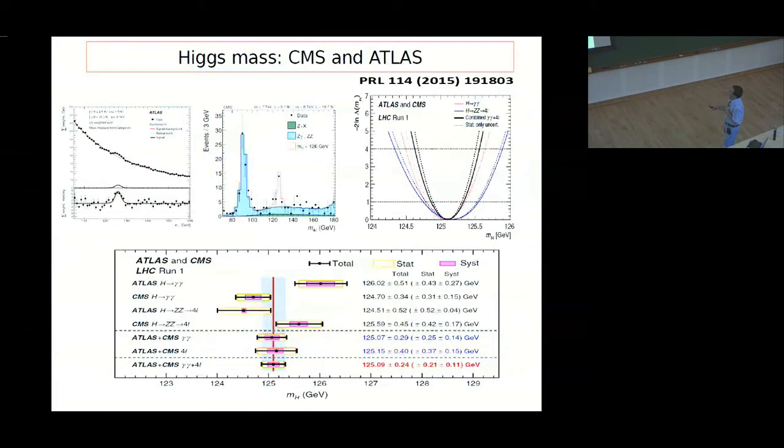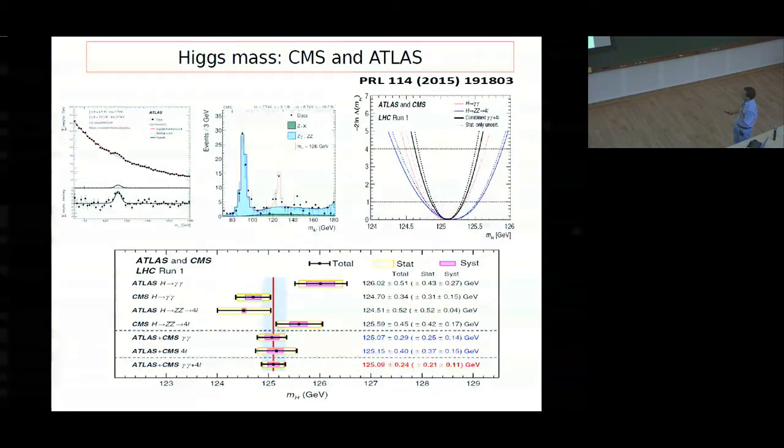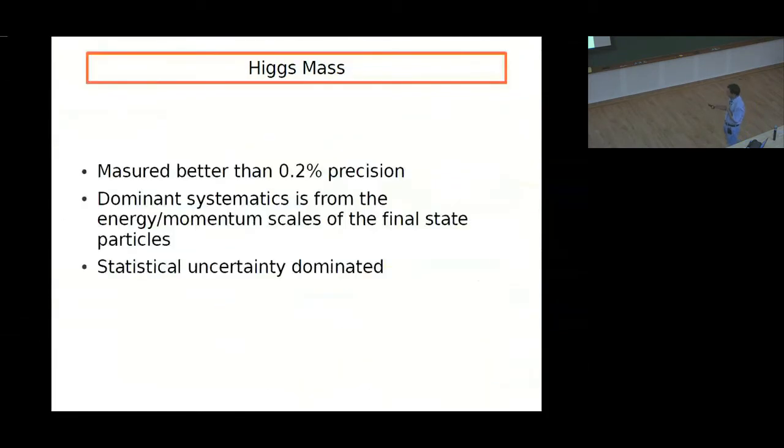This is from, this is a combination of mass from the run one of CMS and ATLAS, the four lepton channel. This is from CMS and Higgs to diphoton channel. This example is from ATLAS. Using this profile likelihood ratio based method, one finds that after combining all of run one high resolution channel, the best fit mass of Higgs boson lies at 125.09 GeV, with about less than 0.2 percent precision. The dominant systematic is from energy and momentum scales of the final state particles, photons and leptons. And still we are statistical uncertainty dominated.